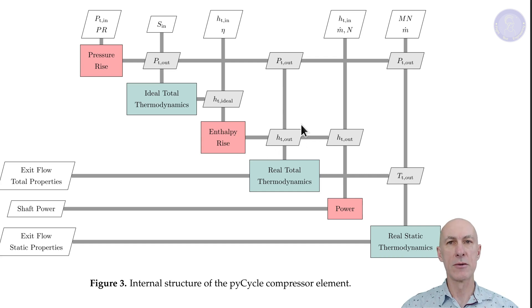Then we have the real total thermodynamics, and once we know the entropy, this block calculates a whole bunch of other thermodynamic properties of the flow. We have the power block, which knowing how the gas properties change, then this block is going to figure out how much power the compressor needs to consume using the torque and shaft speed to achieve the pressure change that we want. And then we have the real static thermodynamics, which finally calculates the static conditions at the exit of the compressor.